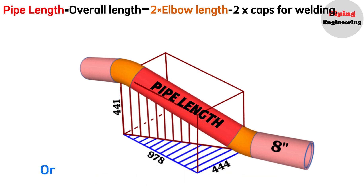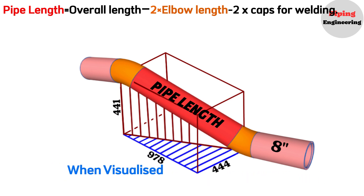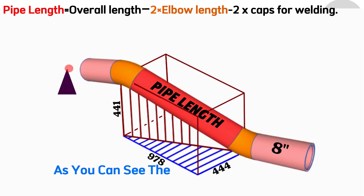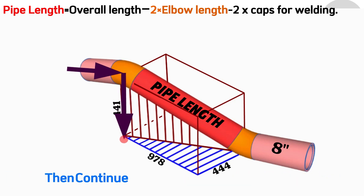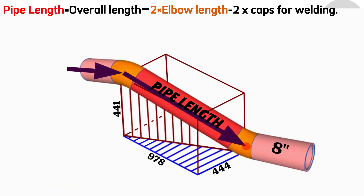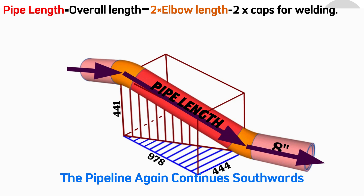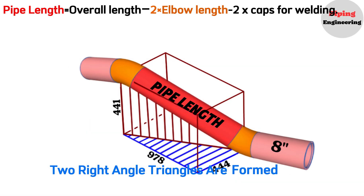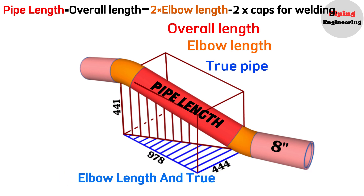Let's denote the overall length, or the center-to-center distance between the elbows, as L. The double-rolling part of the pipeline is easier to understand when visualized within a right-angled parallelogram. The 8-inch pipeline extends southwards. At the top-right corner of the parallelogram, the pipeline first descends by 441 mm, then continues southwards for 978 mm before turning eastwards for 444 mm. At the bottom-left corner, the pipeline again continues southwards. During double rolling, two right-angled triangles are formed using dashed lines, which we will use to calculate the overall length, elbow length, and true pipe length.